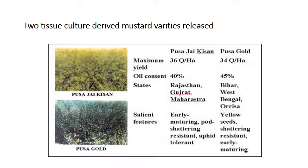Two tissue culture-derived mustard varieties released are Pusa Jai Kisan and Pusa Gold. Pusa Jai Kisan has maximum oil content, with 36 quintals per hectare yield. Pusa Gold has 34 quintals per hectare yield. Oil content of Pusa Jai Kisan is 40% and Pusa Gold is 45%. Salient features of Pusa Jai Kisan are early maturing, pod shattering resistant, and aphid tolerant. Pusa Gold is yellow seeded, shattering resistant, and early maturing.